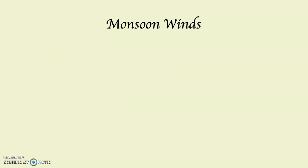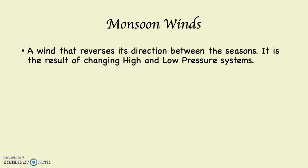Monsoon winds in Asia especially are one of the most famous wind systems on earth and very, very important and consequential. We also get monsoonal flows in California during the summer sometimes, and in Arizona as well, but I'm really going to focus on Asia. A monsoon wind is a wind that reverses its direction between the seasons — really summer and winter, not all four seasons — and they're the result of alternating high and low pressure systems between the seasons.